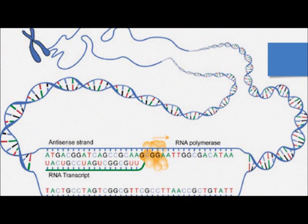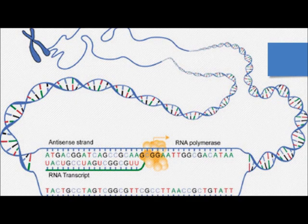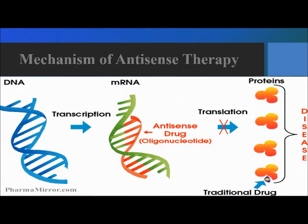It is possible to synthesize a strand of nucleic acid such as DNA, RNA, or a chemical analog that will bind to the messenger RNA (mRNA) produced by that gene and inactivate it, effectively turning the gene off. Antisense drugs work by stopping the production of diseases associated with overproduction of a specific protein or production of the bad protein in the body.